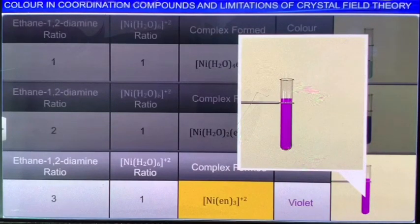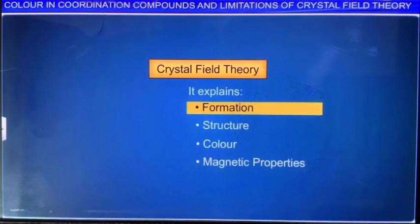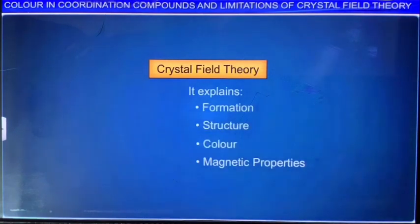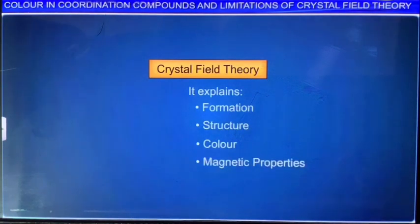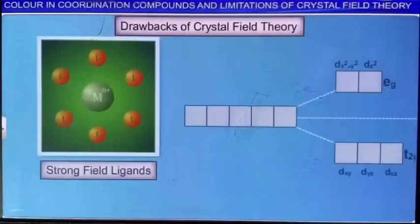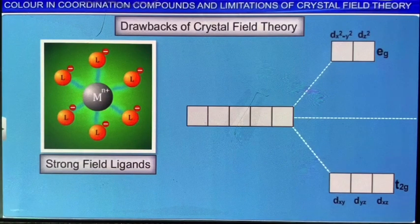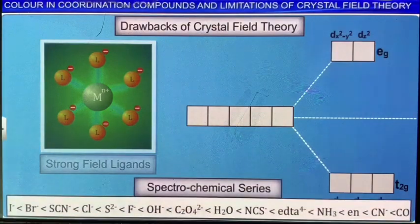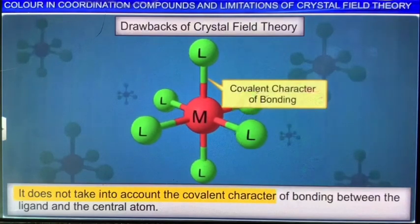Now let's see the drawbacks of the crystal field theory. Although it successfully explains the formation, structure, color, and magnetic properties of coordination compounds to a large extent, it suffers from drawbacks. If the assumption that anionic ligands are point charges is correct, then anionic ligands should act as strong ligands and exert the greater splitting effect. However, anionic ligands are actually found at the low end of the spectrochemical series. The other drawback is that it does not take into account the covalent character of bonding between the ligand and the central atom.